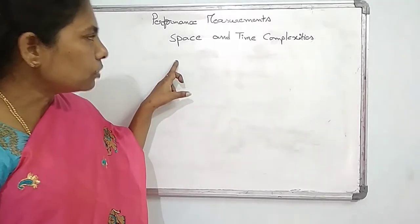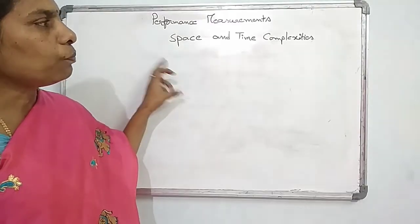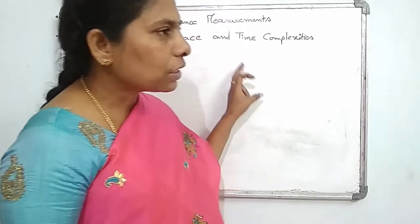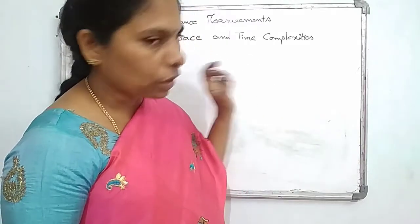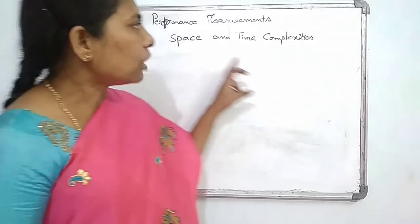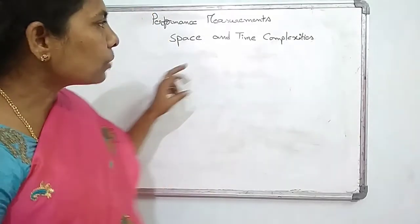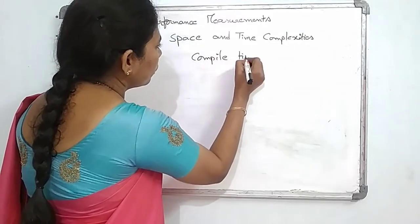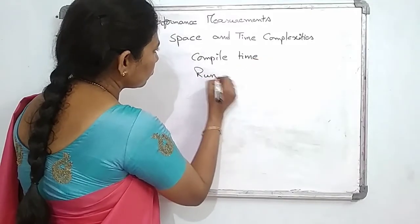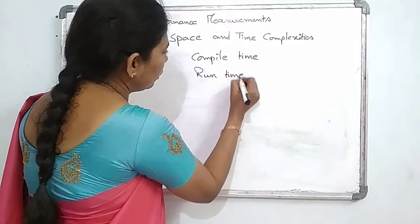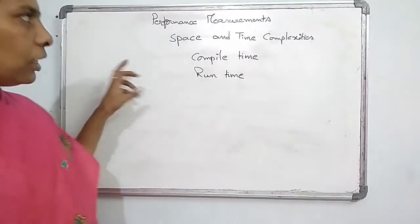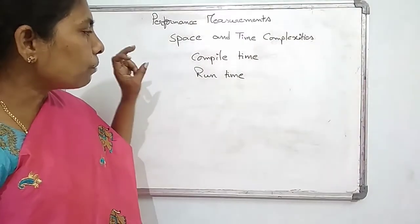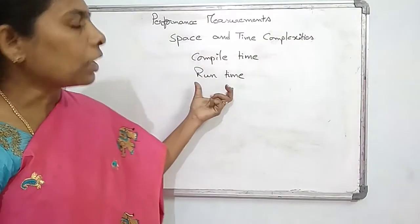The space complexity means how much space is needed for storing the given algorithm values. The time complexity means how much time is needed to compute the given algorithm. The space and time complexities mainly depend on the compile time and the run time, but the measurement is mainly depending on the run time of the algorithm.